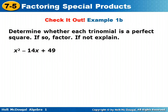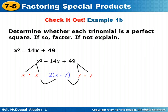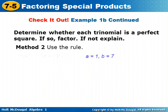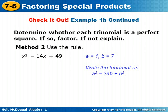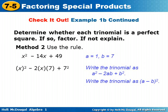Determine whether each trinomial is a perfect square — this is an example for you to try on your own, and then you can check back for the answer. x squared is a perfect square, breaking down into x times x, and 49 is a perfect square, which can be broken down into 7 times 7, or 7 squared. The middle would have to equal x times 7 times 2. So to factor, our a value is x and our b value is 7. We write it as a squared minus 2ab plus b squared: x squared minus 2 times x times 7 plus 7 squared. Since there is subtraction between the first two terms, we write it as a minus b squared — so x minus 7, in parentheses, squared.